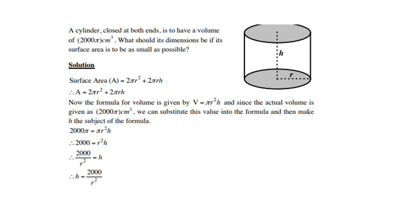Since the actual volume is given as 200π cm³, we can substitute this value into the formula and then make h the subject. Because remember, to differentiate, you need only to have one variable. So I need to get rid of h so that I can only be left with r.